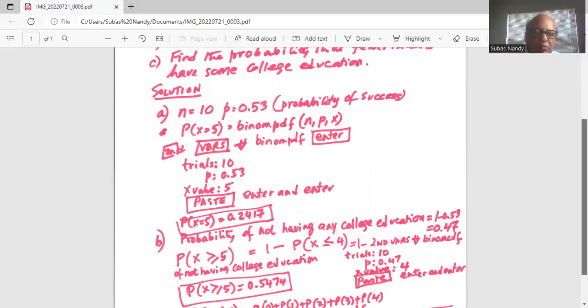And that is complement or opposite of the event probability of x less than or equal to four. So using the law of complement, probability of x greater than or equal to five is one minus probability of x less than or equal to four. Rule of complements.